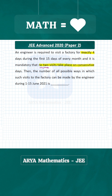The key condition here is that no two visits should take place on consecutive days, and we have to find the number of possible ways in which this can be done. Whenever we have to select from a given number of objects such that no two selections are consecutive, we use the Tick and Cross method.